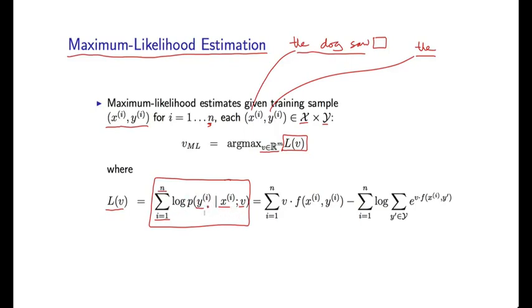Okay, so just to remind you, p takes the following form. It's e to the v.f dot dot dot dot over some normalization term. It takes this kind of form. If we take log of this whole thing, we end up, as I showed you just previously in this lecture, v dot f minus log something. Okay.